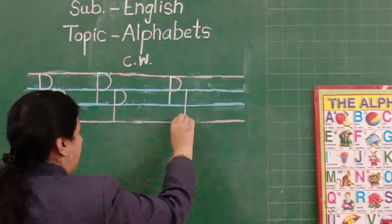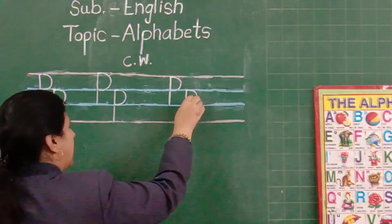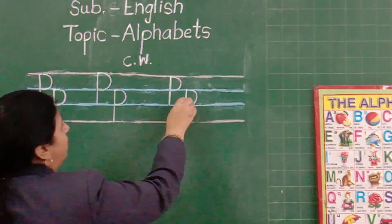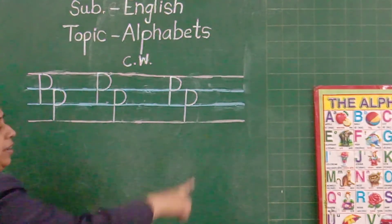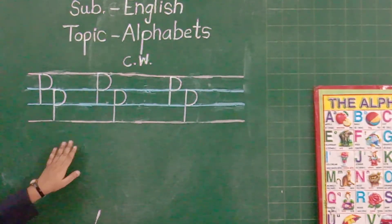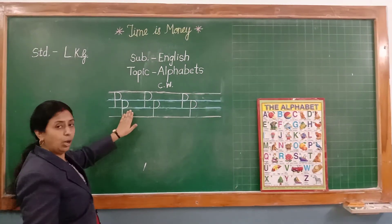From blue line to red line. You have to write. Standing line. Curl. Small p. Understood? How to write capital P small p in your notebook?